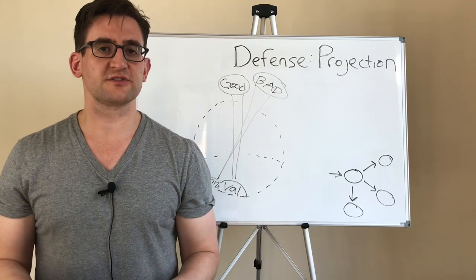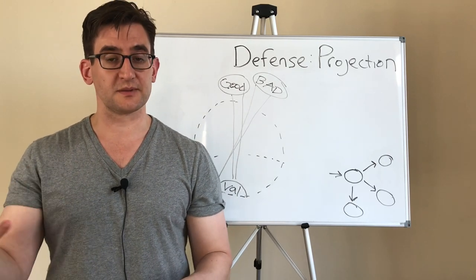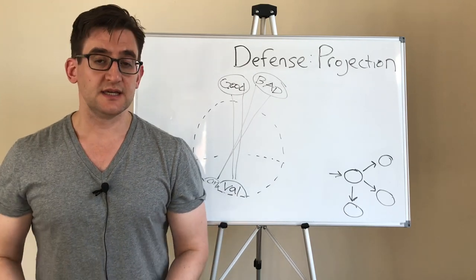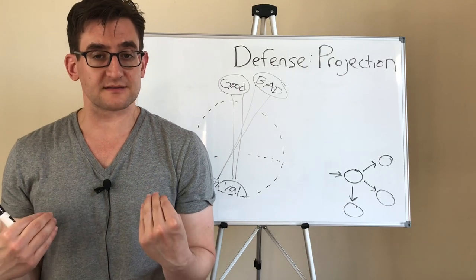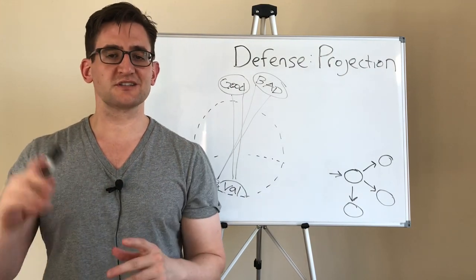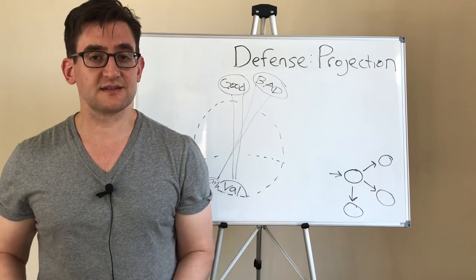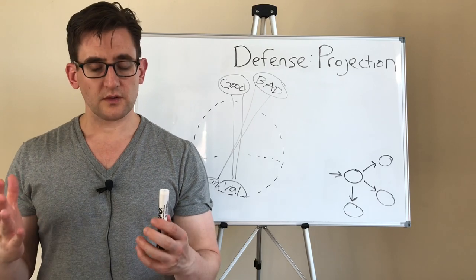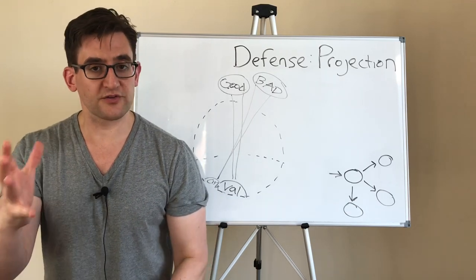And Jackie Chan projects onto Chris Tucker his own ineptitude, his own inability to deal with authority. Because Jackie Chan commits another projection—he projects his own competence onto authority, projects it onto the FBI, onto the Chinese consulate. But it's Jackie Chan who is the capable one.